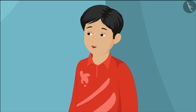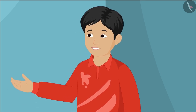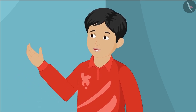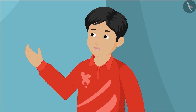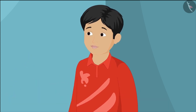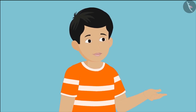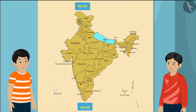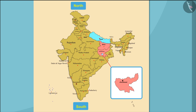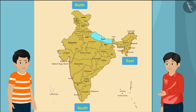By looking at the map of India, which states are in the east direction? By seeing the map, one can easily tell that Bihar, Jharkhand, and West Bengal are in the east direction.